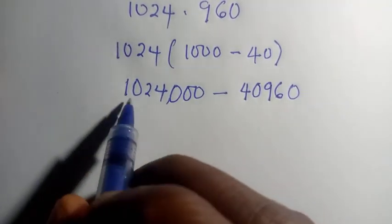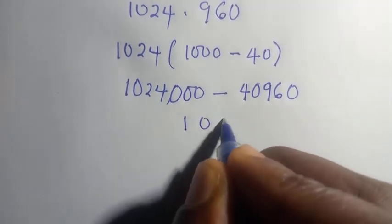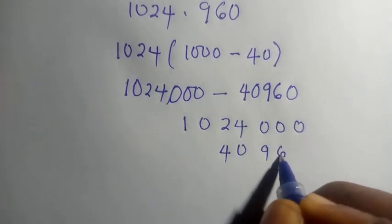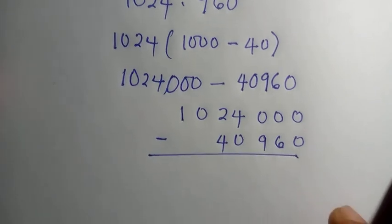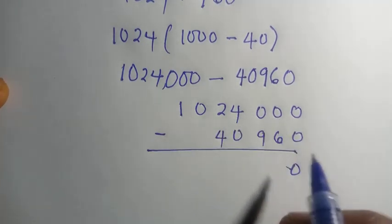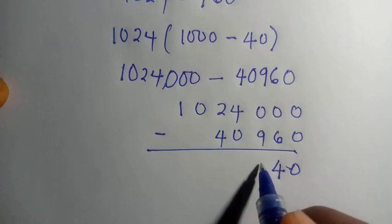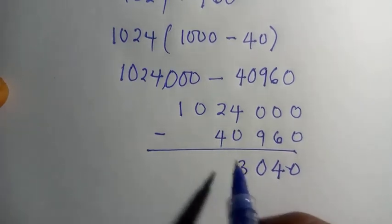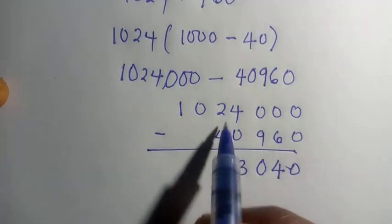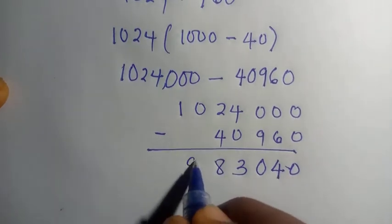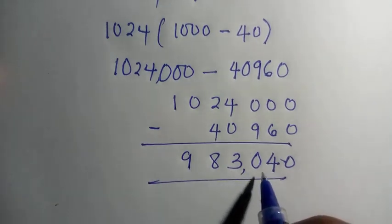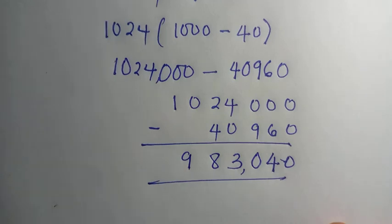We now subtract: 1,024,000 minus 40,960. Working through the subtraction — borrowing where needed — we get the result. Therefore, the answer to this problem is 983,040. This is how to solve this without using a calculator.